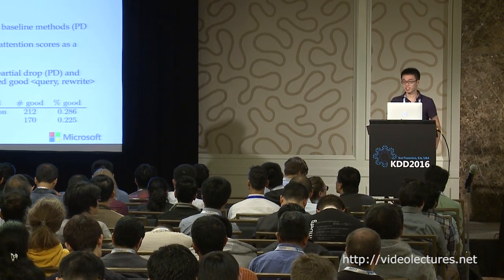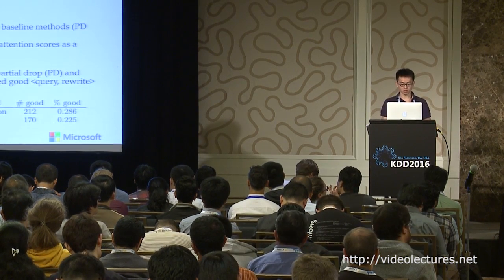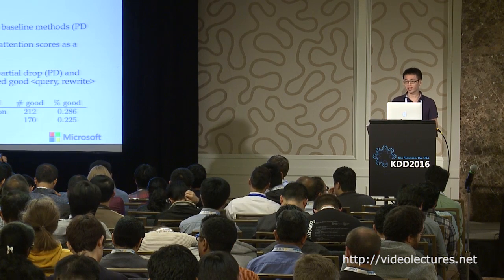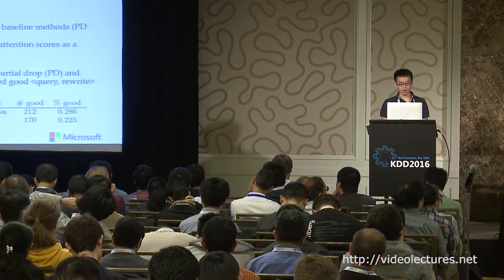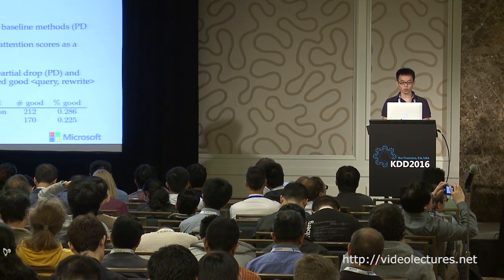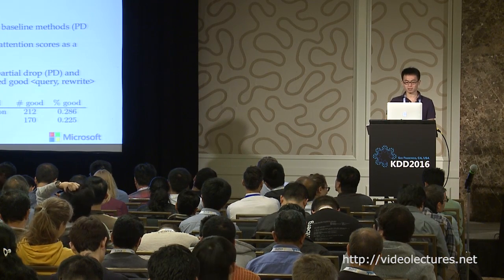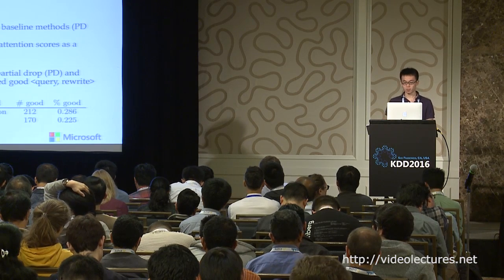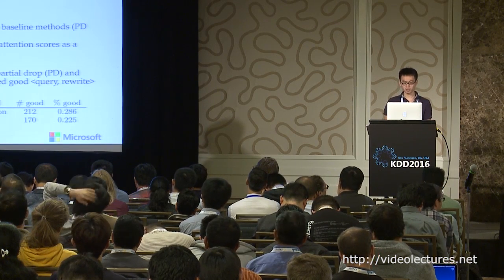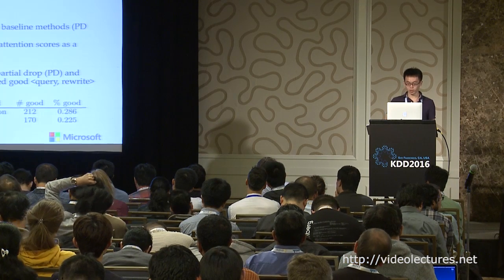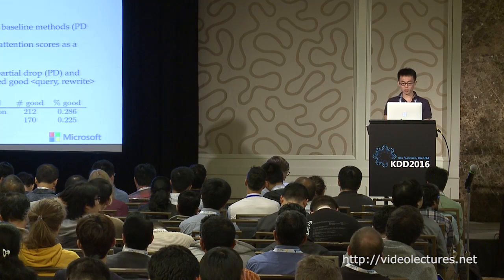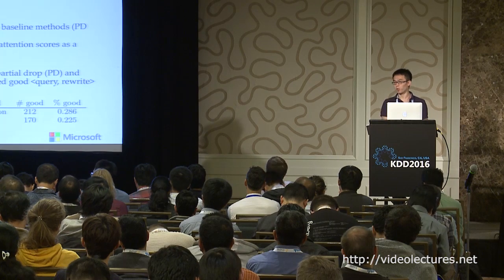In the second experiment, we explicitly use the attention scores learned by the model to evaluate on the query rewrite task. For this task, we take a long query and shorten it into a sub-query of length K. With the attention model, we simply choose the top-K words assigned with the largest attention scores and use those as the rewrite. As comparison, we compare with two baseline models: partial drop (PD) and smart-intent (SI), which are used in the Bing Ads system. We asked human judges to score the results from both the attention models and baselines. Attention models outperform both baselines by a margin.